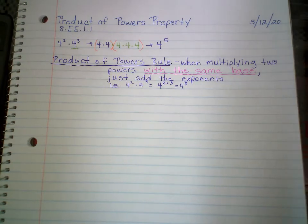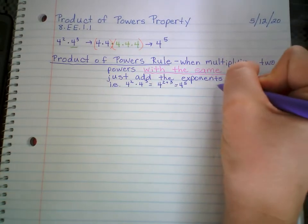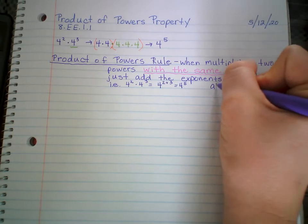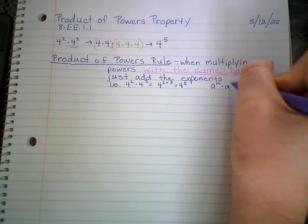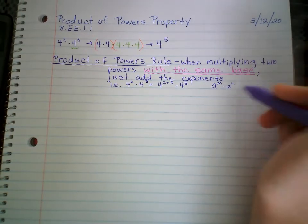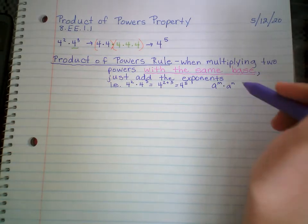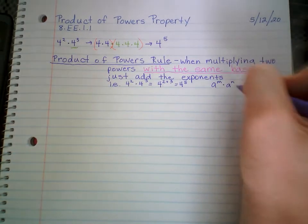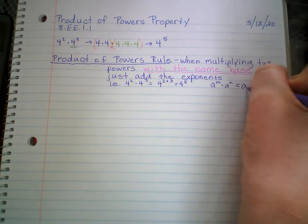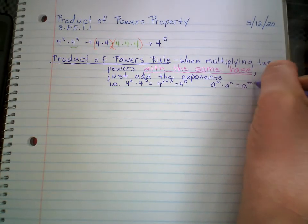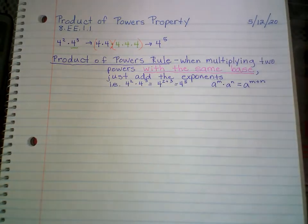Let's say you were doing letters. So let's say it was A to the M power times A to the N power. You're multiplying 2 powers — A to the M, A to the N. Multiplying them with the same base, they both have A as the base. That's just A, then you just add M and N — you add the exponents. Pretty straightforward.